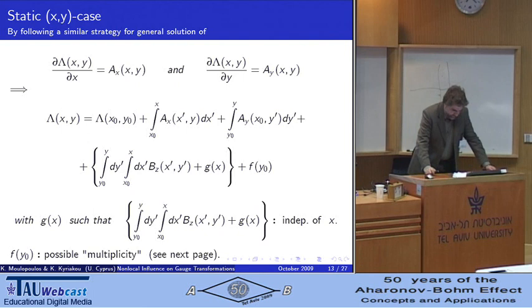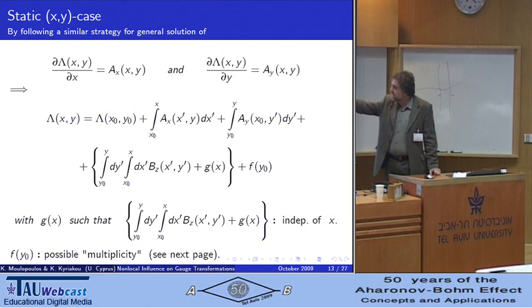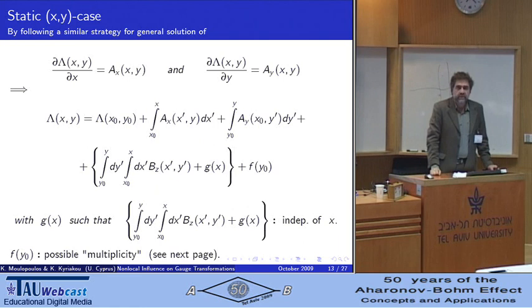Here A is A2 minus A1 is the difference between the two vector potentials. It turns out by the same exercise that we get what I would call an Aharonov-Bohm form where we have these line integrals of vector potentials, but we also get this additional non-local term that contains differences of magnetic fields that can exist in points in space that are remote to the observation point x y.